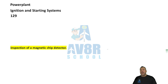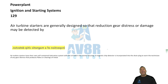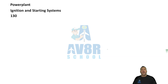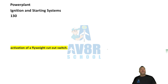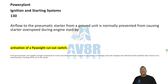Number 129. Air turbine starters are generally designed so that reduction gear stress or damage may be detected by an inspection of the magnetic chip detector. Number 130. Airflow in the pneumatic starter from the ground unit is normally prevented from causing starter overspeed during engine start by activation of a flyweight cutout switch.